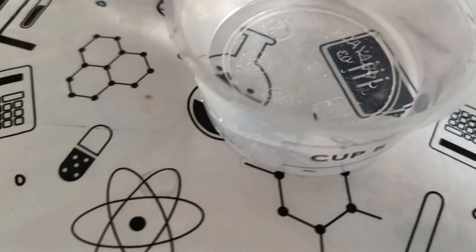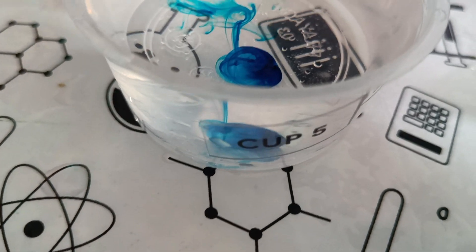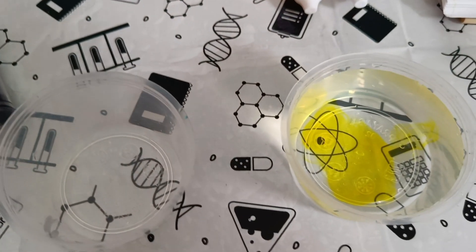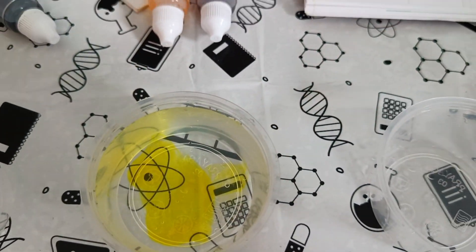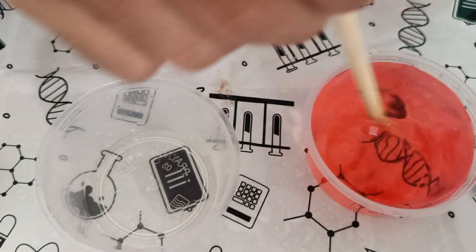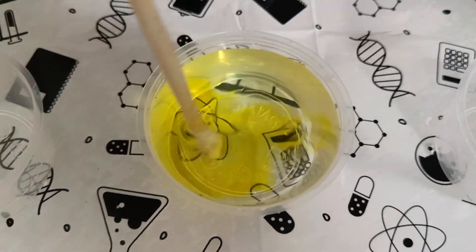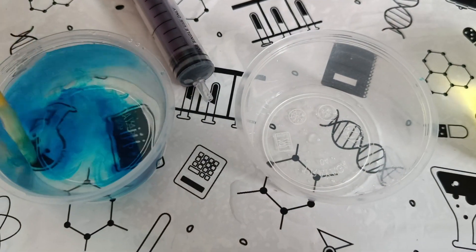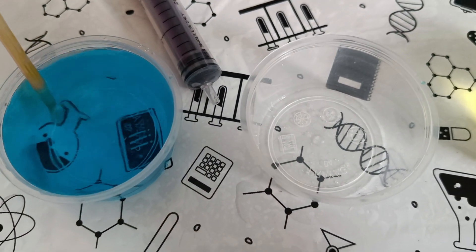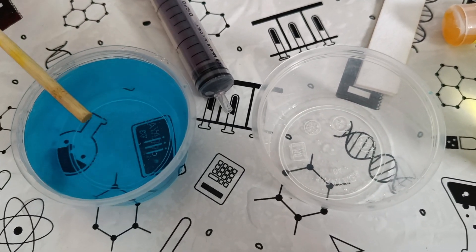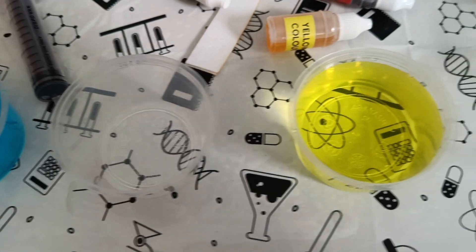Then in the last one we have to add two drops of blue color. So let us add two drops of blue color. Okay, now these are ready. Now we have to mix them with a stick or a spoon, it's your choice what you want to mix with.